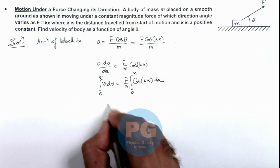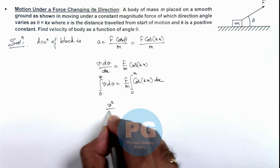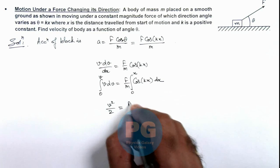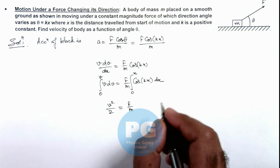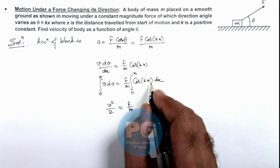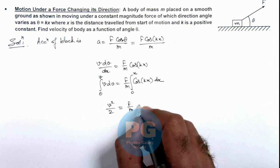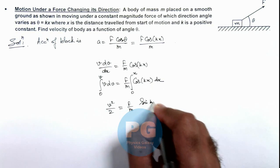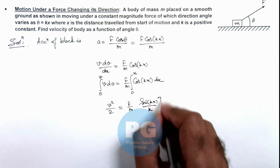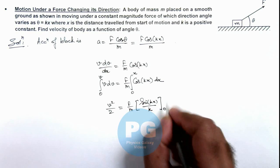So this left hand side after integration becomes v squared by 2, and right hand side this is f by mk, sine kx, and we substitute the limits from zero to x.